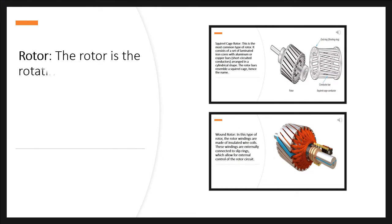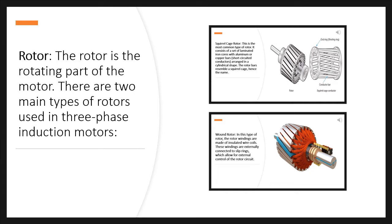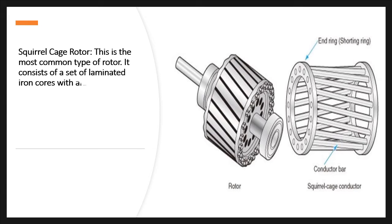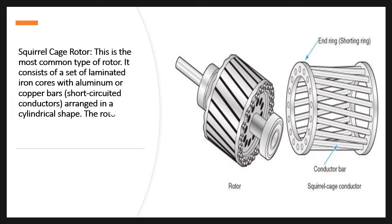Rotor: The rotor is the rotating part of the motor. There are two main types of rotors used in 3-phase induction motors. Squirrel cage rotor: This is the most common type of rotor. It consists of a set of laminated iron cores with aluminum or copper bars, short-circuited conductors, arranged in a cylindrical shape. The rotor bars resemble a squirrel cage, hence the name.